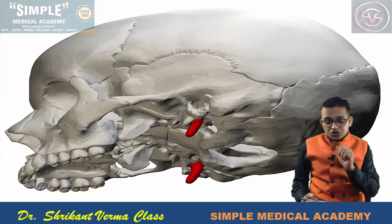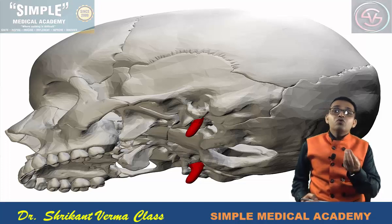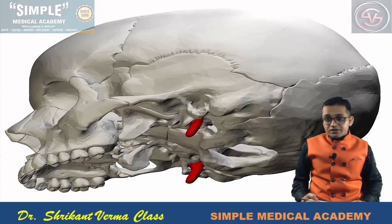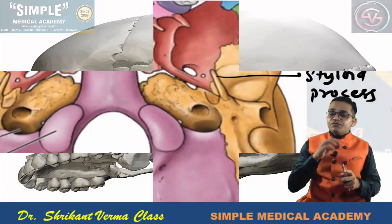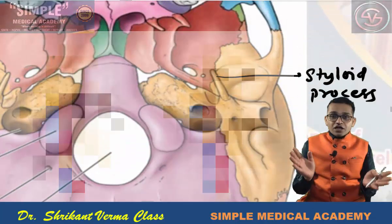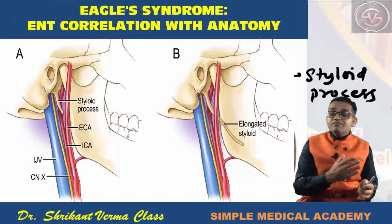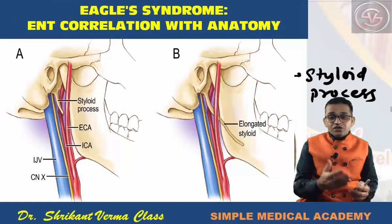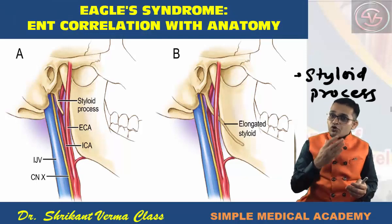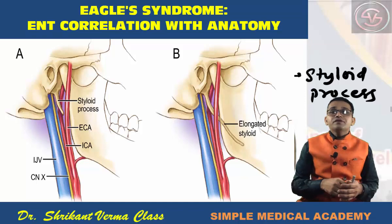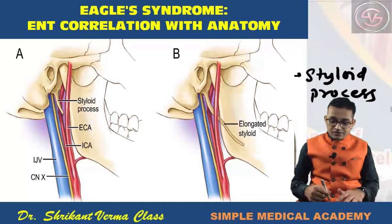Muscles and ligaments are attached to this styloid process, known as the styloid apparatus. In few individuals, this styloid process is enlarged and it compresses the nearby structures, which is known as Eagles syndrome — a correlation of the anatomy with ENT.